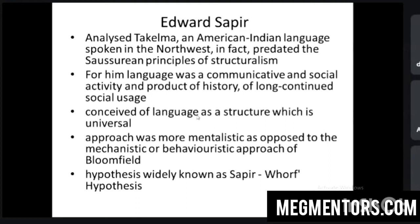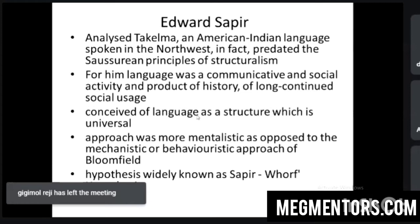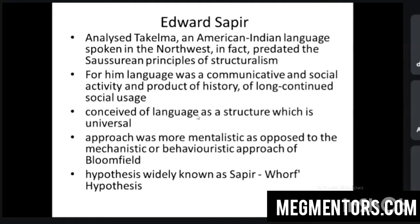One more feature that distinguishes Sapir from Bloomfield is his emphasis on mentalism. He said that language is mentalistic — his approach was more mentalistic compared to the mechanistic approach of Bloomfield. Bloomfield's approach was completely mechanistic, while Sapir gave importance to the mindset of the speaker. Sapir was also part of the Sapir-Whorf hypothesis, which we will discuss later. His most important idea is that he conceived language as having a universal structure, and he emphasized the mentalistic nature of language.